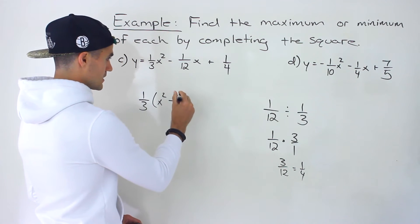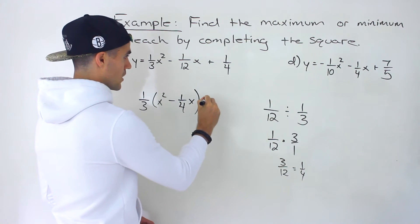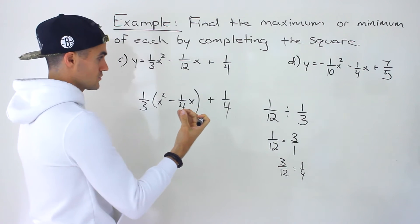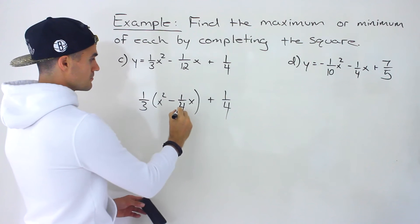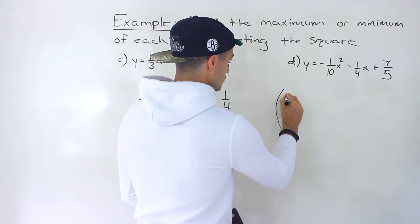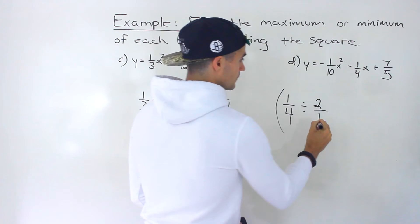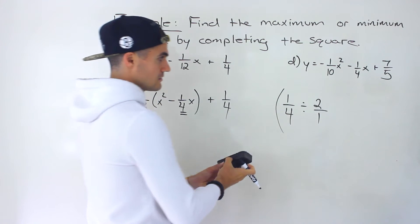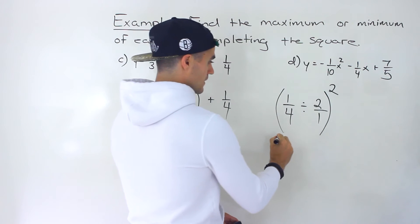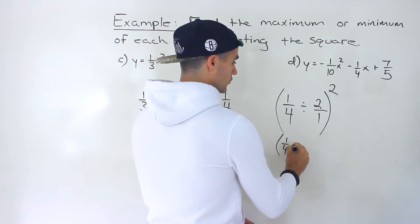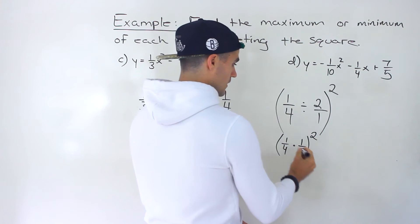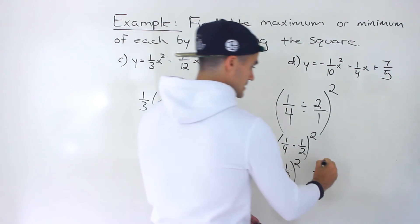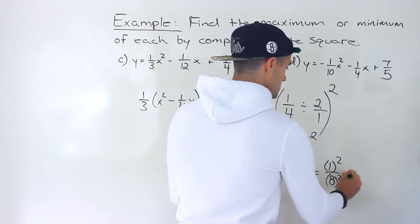Next step: take the b value inside the bracket — that's one-quarter — and divide it by 2. Dividing one-quarter by 2 is like multiplying by one-half, giving one-eighth. Then we square it. When raising a fraction to an exponent, we take the numerator and denominator each to that exponent: one squared over eight squared gives one over 64.